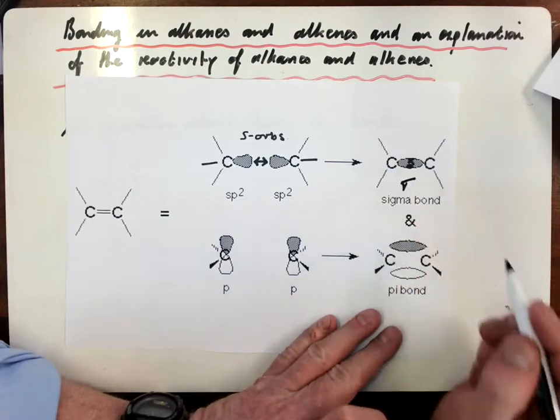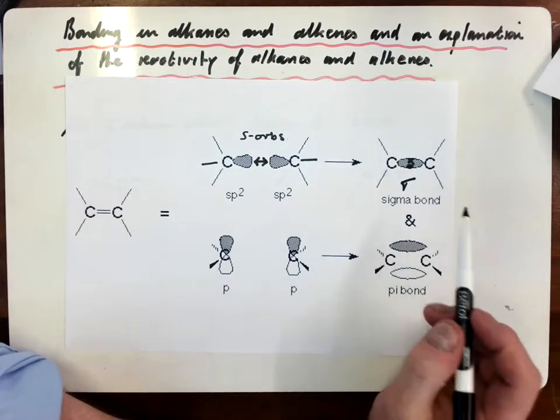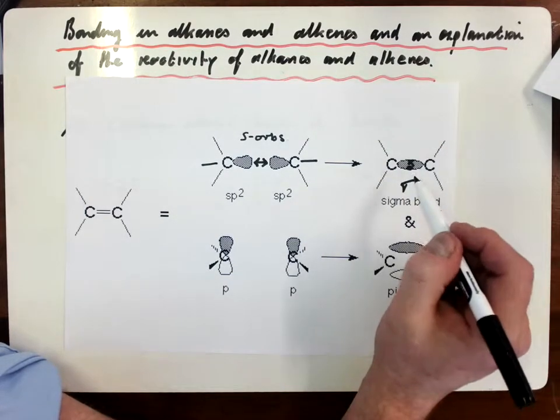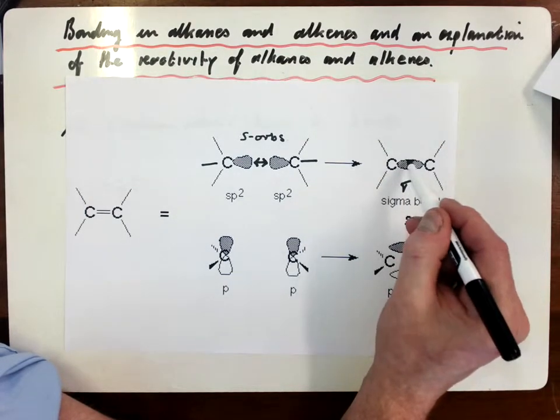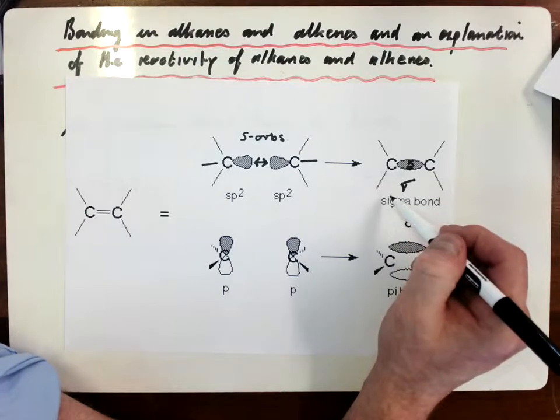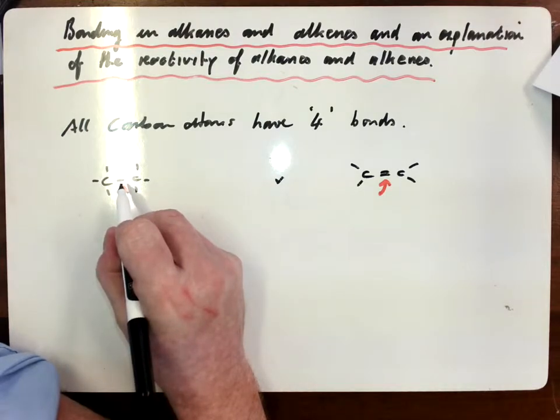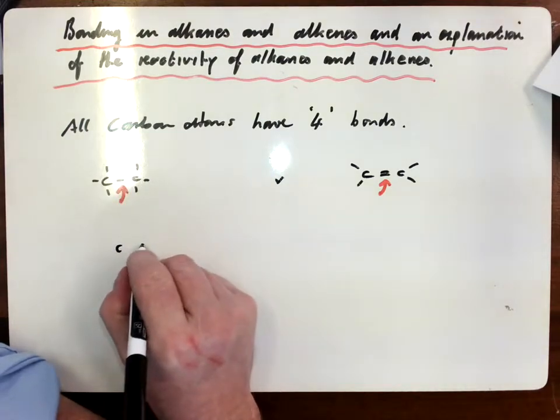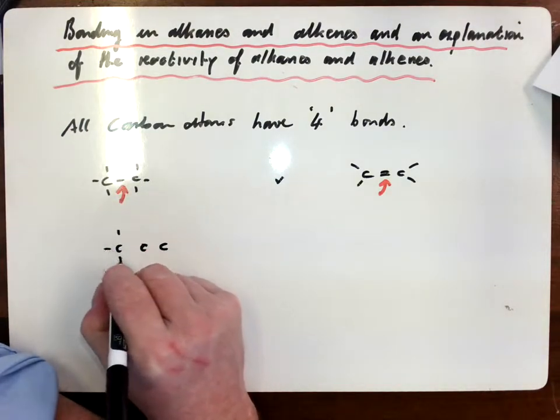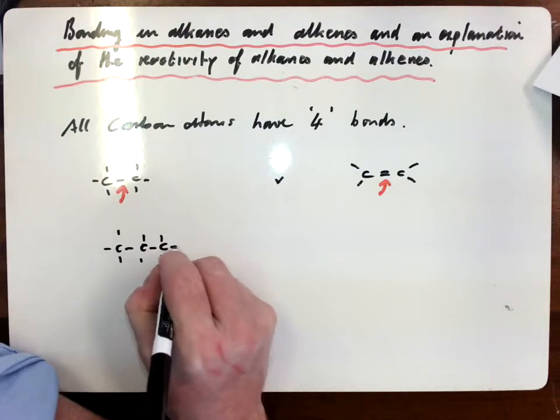Shorthand you might see written as σ. And if you look at this sigma bond, it is a single bond. It has one pair of electrons in there. And that is the type of bond that you will have between the two carbons in an alkane, not just ethane, but obviously any alkane.